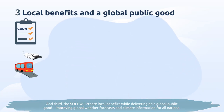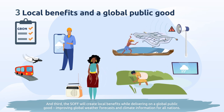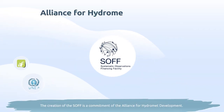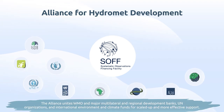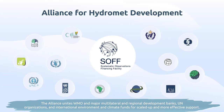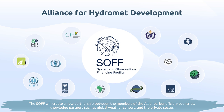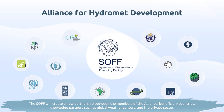And third, the SOF will create local benefits while delivering on a global public good, improving global weather forecasts and climate information for all nations. The creation of the SOF is a commitment of the Alliance for Hydro-Met Development. The Alliance unites WMO and major multilateral and regional development banks, UN organizations, and international environment and climate funds for scaled-up and more effective support. The SOF will create a new partnership between the members of the Alliance, beneficiary countries, knowledge partners such as global weather centers, and the private sector.